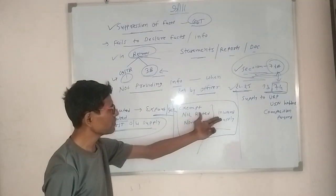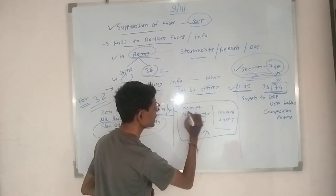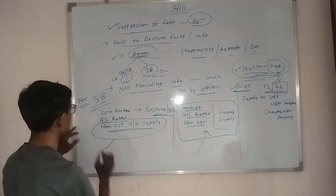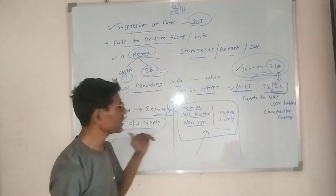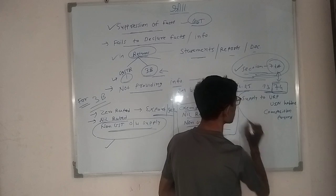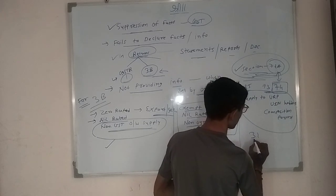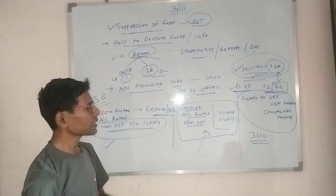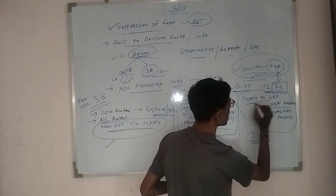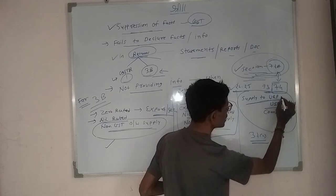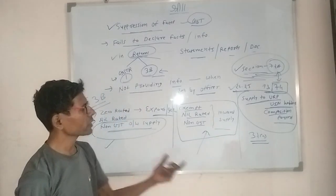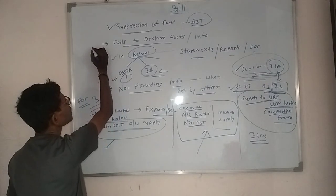In GSTR-3B, if you have inverted supply related to non-GST, nil-rated, and exempt supply to declare, or if you have outward supply — non-GST outward supply, nil-rated outward supply, or zero-rated outward supply — and you do not disclose that detail, then it will also be suppression of fact. Also, in GSTR-3B point 3.1.3, you have to disclose outward supply details: supply to unregistered persons (UR) state-wise, supply to UIN holders, and supply to composition persons. If you have this information and do not declare it, then it will also be failure to declare the information, i.e., suppression of fact.